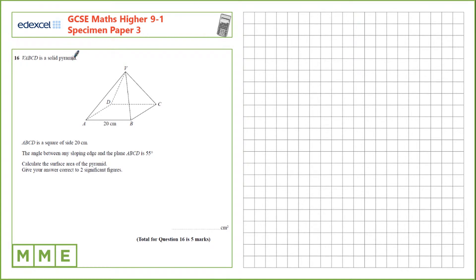Question 16. We have a solid pyramid with a square base of side 20 cm. The angle between any sloping edge and the plane is 55 degrees. Calculate the surface area of the pyramid.